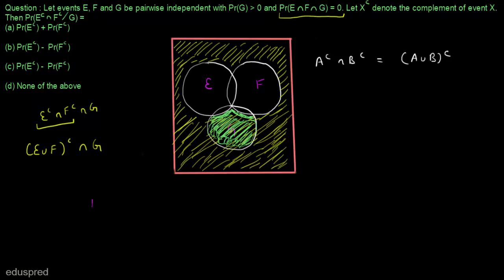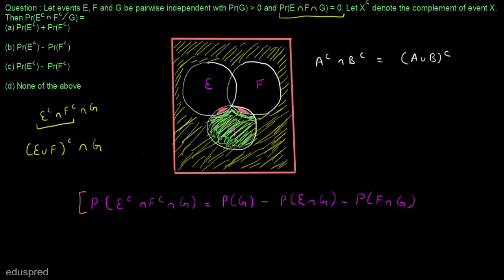So the probability of Eᶜ∩Fᶜ∩G equals probability of G minus probability of E∩G minus probability of F∩G. That means from the entire region G we subtract the intersection of E and G and the intersection of F and G. This is the numerator of our expression.